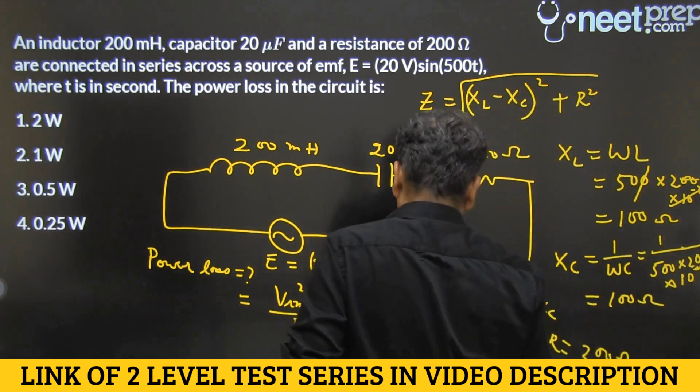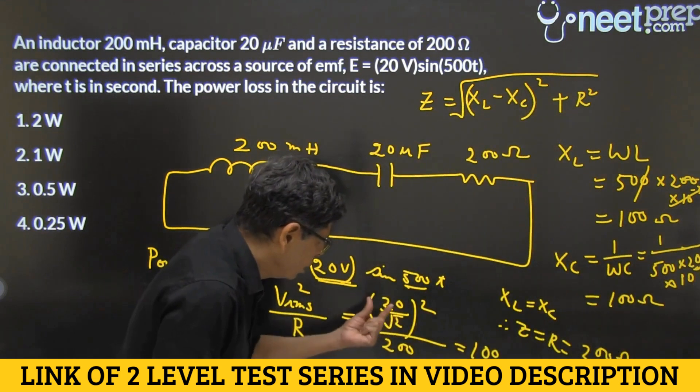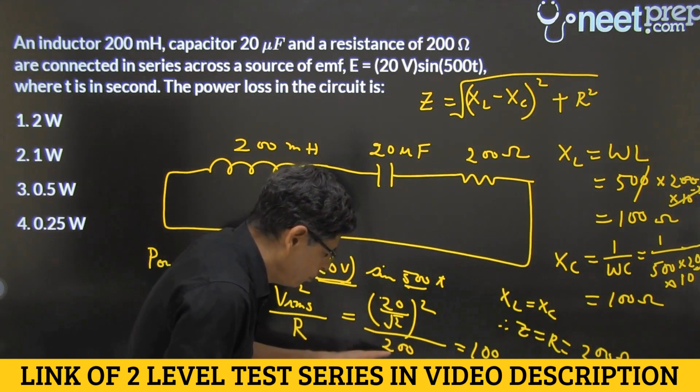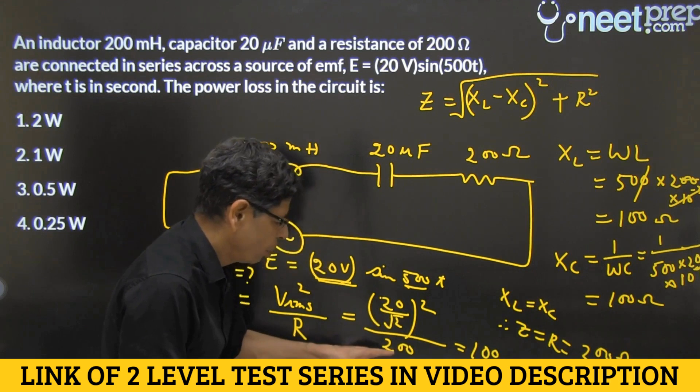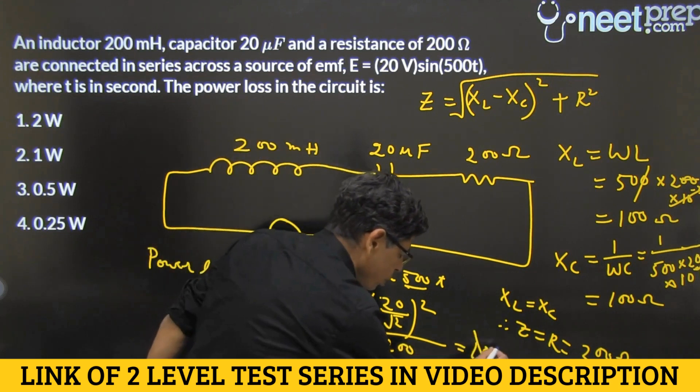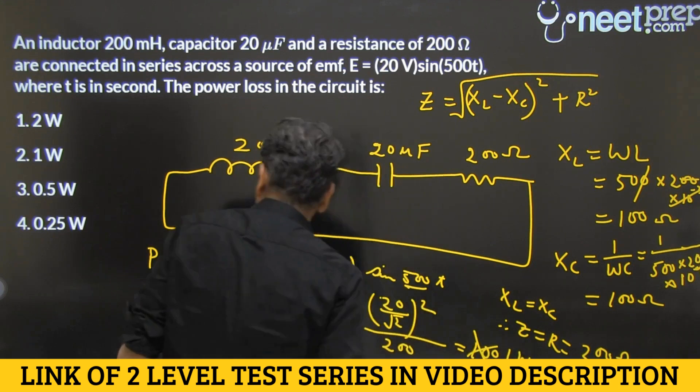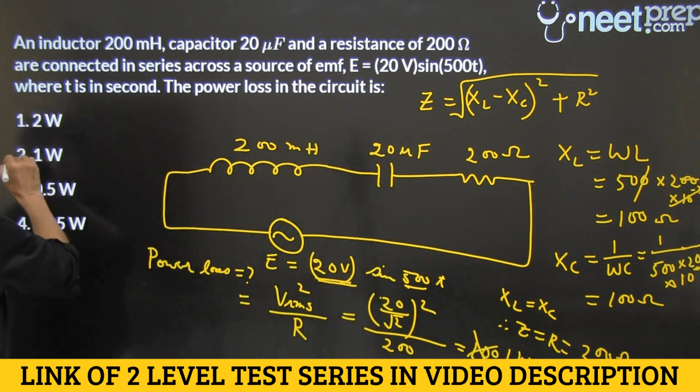Now, I did the calculation wrong, this is 20 square is 400, and this is 2, going in the denominator makes it 400, so this is not 100, but 1 and unit is what, 1 watt is the answer, option 2 is selected.